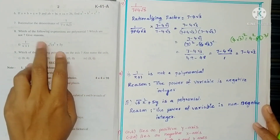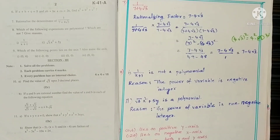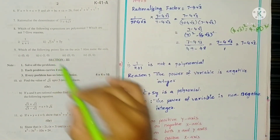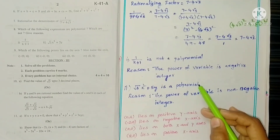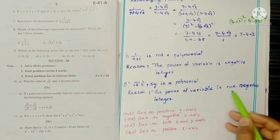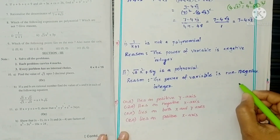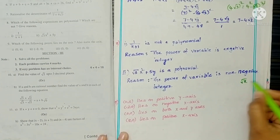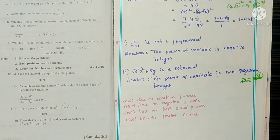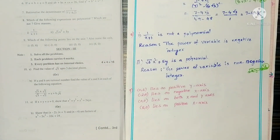Question 8: Which of the following expressions are polynomials? (i) 1/(x+1) is NOT a polynomial because the power of the variable is a negative integer. (ii) √3·x² + 5y IS a polynomial because the power is 2, a non-negative integer. (iii) √x is NOT a polynomial because √x = x^(1/2), and 1/2 is not an integer.